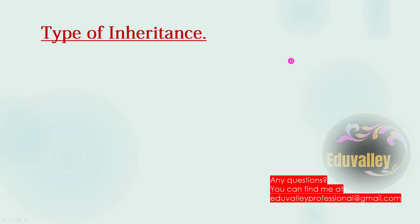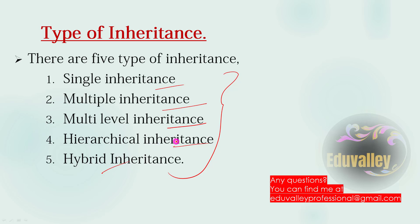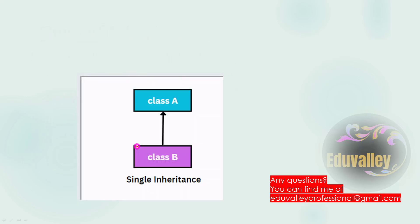There are different types of inheritance. In this class we are going to cover 5 types of inheritance: Single inheritance, Multiple inheritance, Multi-Level inheritance, Hierarchical inheritance, and Hybrid inheritance. These are the 5 types of inheritance. This is the diagram.